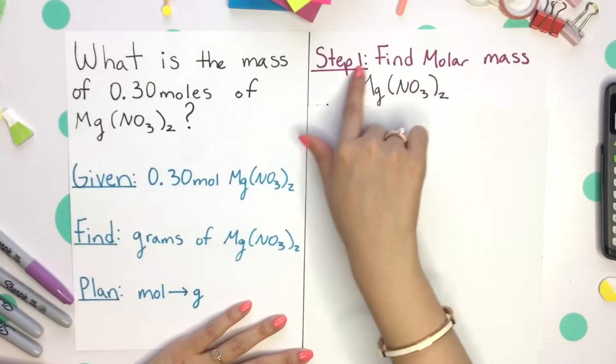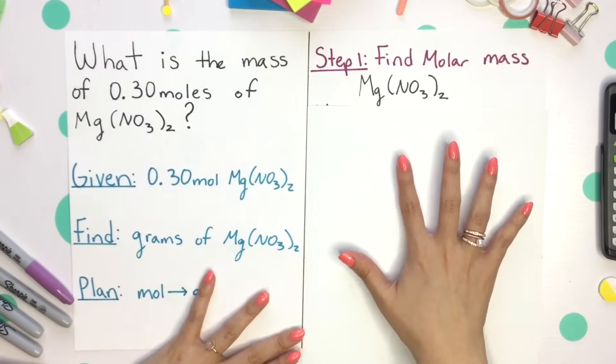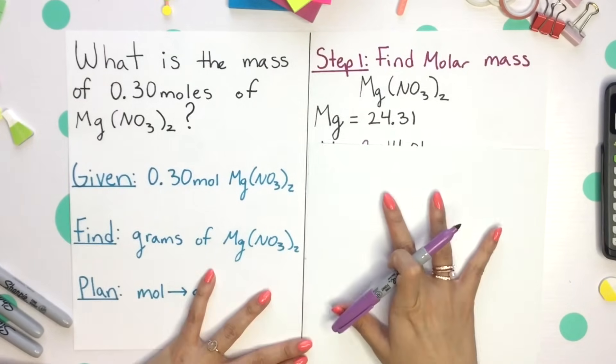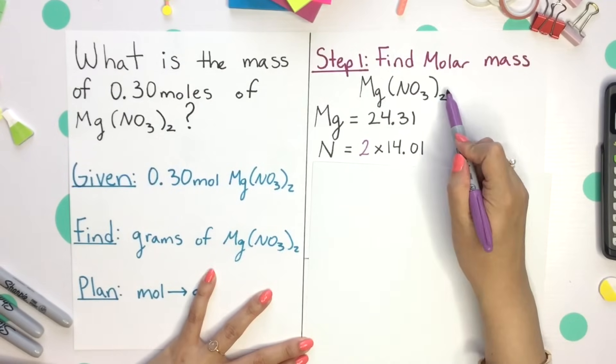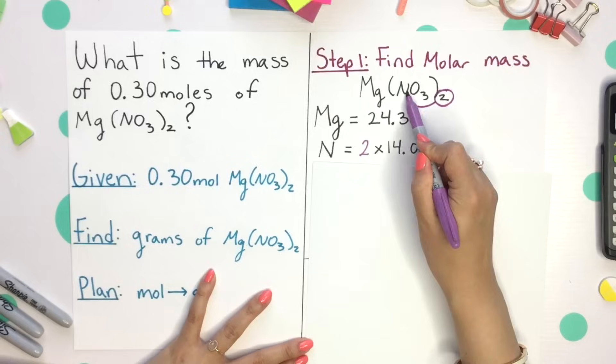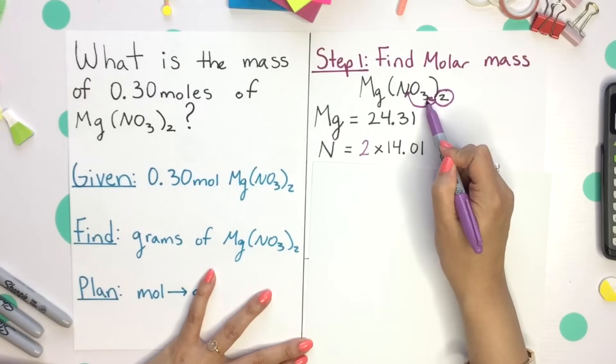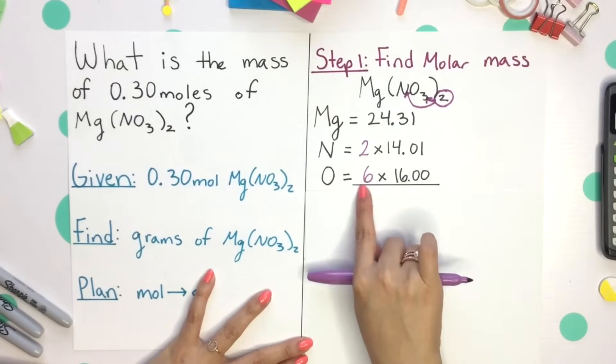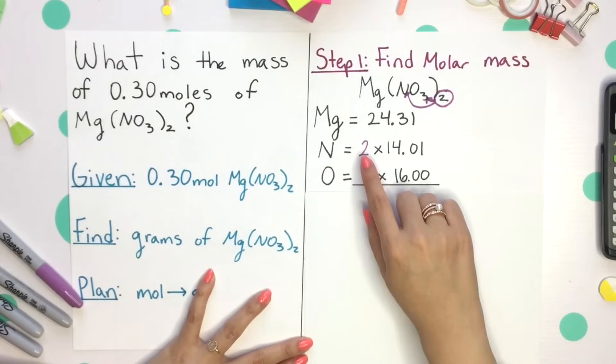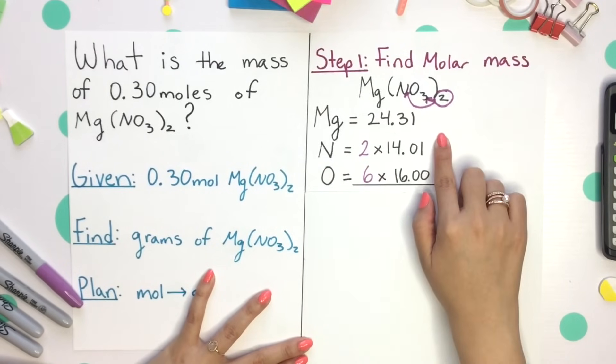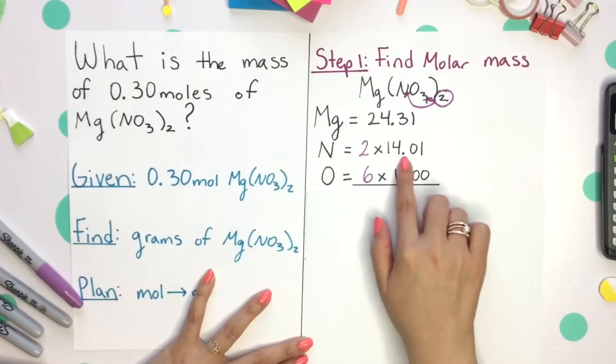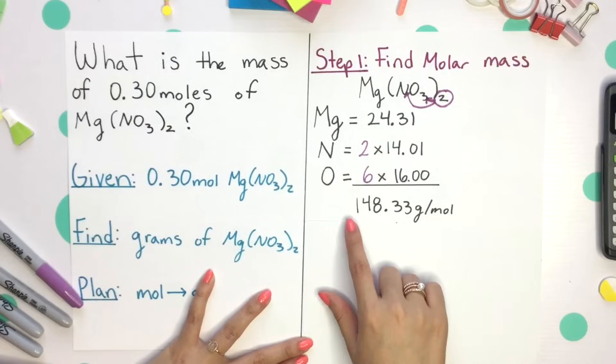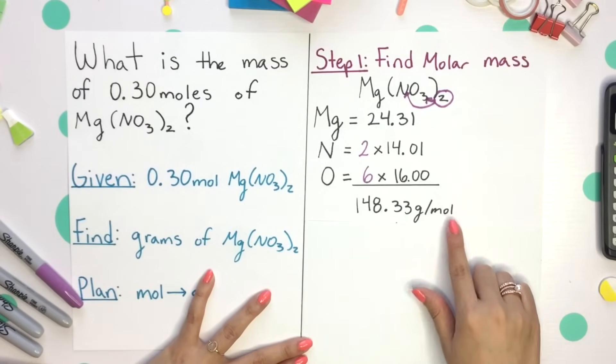Step one is to find your molar mass of that magnesium nitrate. Magnesium has a mass of 24.31, but your nitrogen, there's actually two. I want you to think of this subscript as distributing to each other's subscript. So in our case, we'll have two different nitrogen, and three times two, so six different oxygen. We'll multiply two times the mass of just one individual nitrogen, and then six times the mass of one individual oxygen. Once we add this all together, we'll get 148.33 grams per mole.